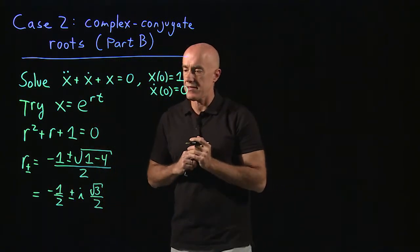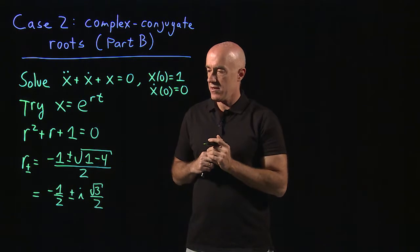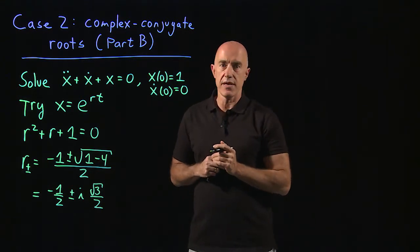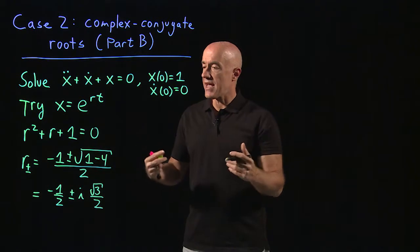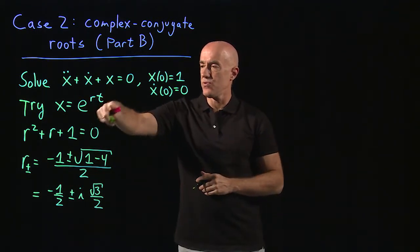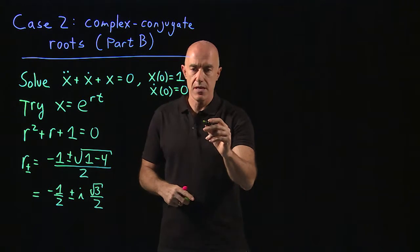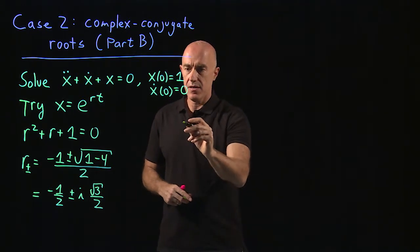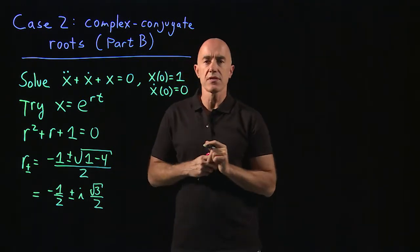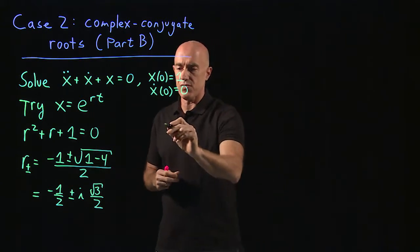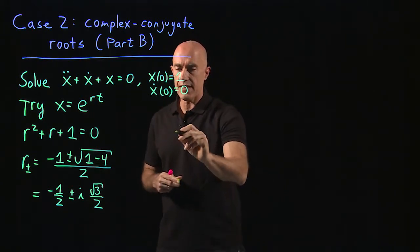So this is the case of complex conjugate roots of the characteristic equation. We know now how to find two real functions, so let me write them down. Let's write the general solution using our two real functions. We have x of t equal to